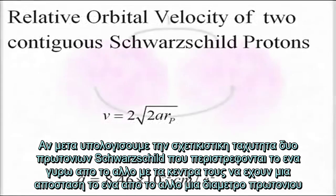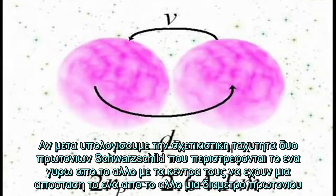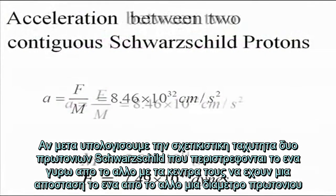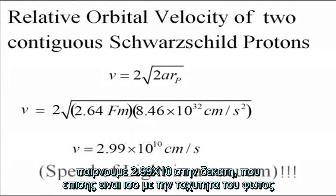If we then calculate the relativistic velocity of two Schwarzschild protons orbiting each other with their centers separated by one proton diameter, we get 2.99 times 10 to the 10th, which is also equal to the speed of light.